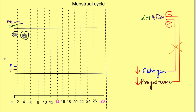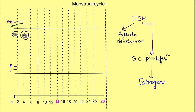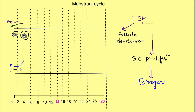The rise in FSH leads to development of follicles — as the name follicle stimulating hormone suggests. It causes follicular development and also leads to proliferation of the granulosa cells, which are the cells surrounding the ovum. It is from these granulosa cells that estrogen is released. So an increase in FSH causes granulosa cell proliferation, follicular development, and release of estrogen, and we see a rise in estrogen levels.